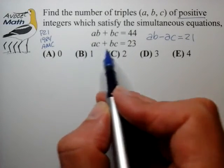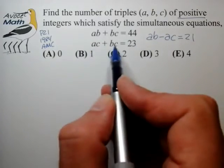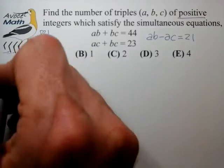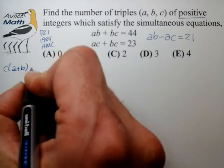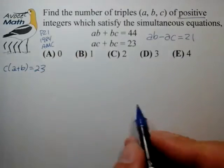Let's take this equation at the bottom here, pull it over. Let's pull out the c term and that gives us c times (a plus b) is equal to 23.